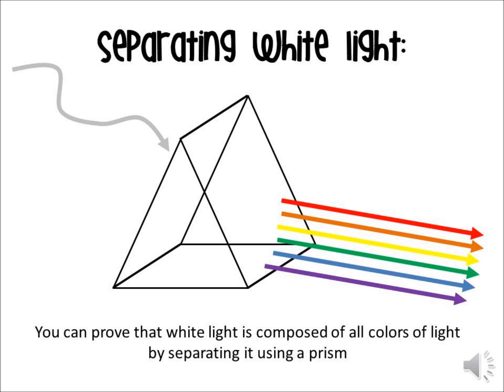You can actually prove this to yourself. There are lots of sources of white light around us, and when those sources pass through a prism — sometimes that can even be a drop of rain, or a drop of oil, or the back of a CD — when the white light bounces in and out of a prism, a rainbow of colors will come out. Red will come on top, followed by orange, yellow, green, blue, indigo, violet. And that is how you can prove that white light is composed of all colors of light.